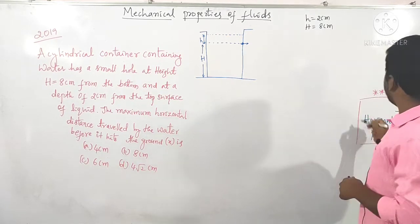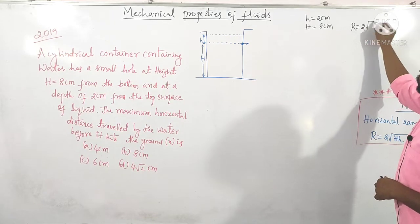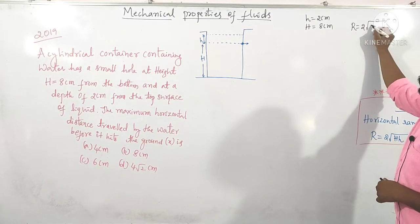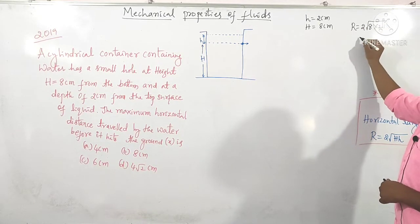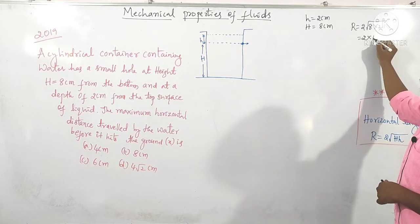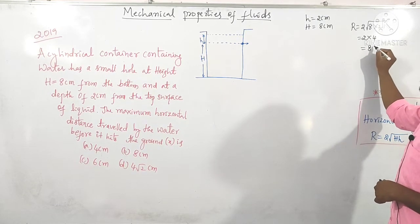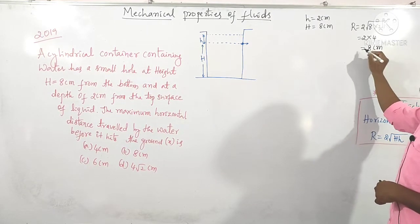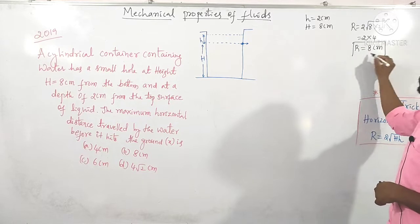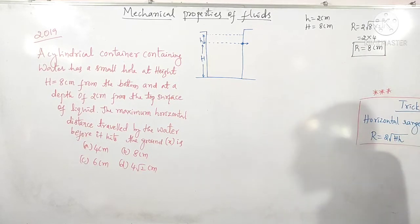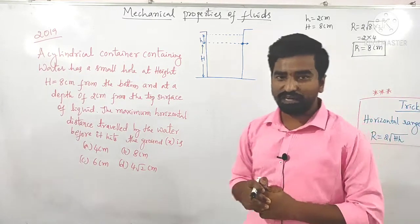The horizontal range formula is R = 2 times square root of (H into h), where H is the height of the hole from the bottom of the tank and h is the depth of the hole from the top surface. Substituting: R = 2 into square root of (8 into 2) = 2 into square root of 16 = 2 into 4 = 8 cm.